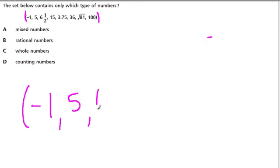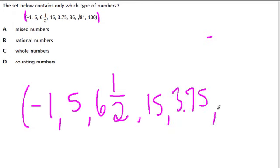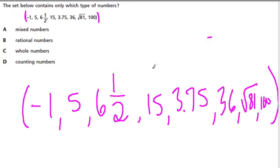I'm just going to rewrite it. We have negative 1, 5, 6 and a half, 15, 3.75, 36, square root of 81, and 100. That's the numbers we're looking at.